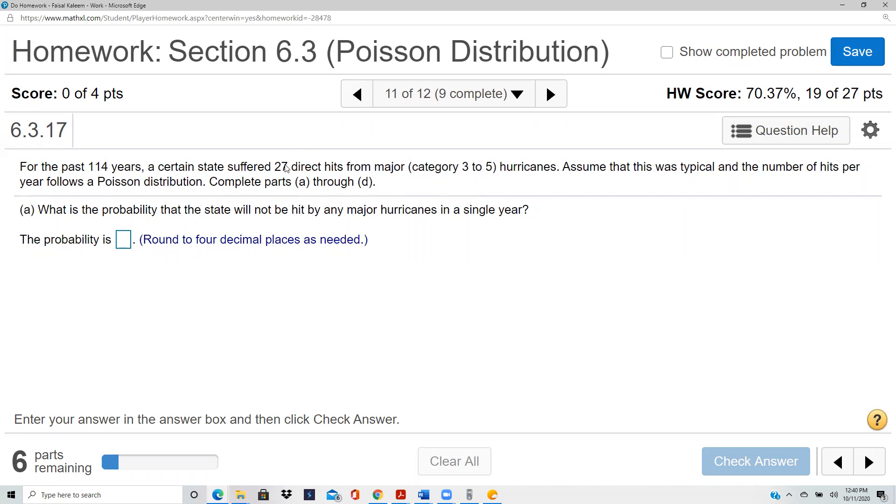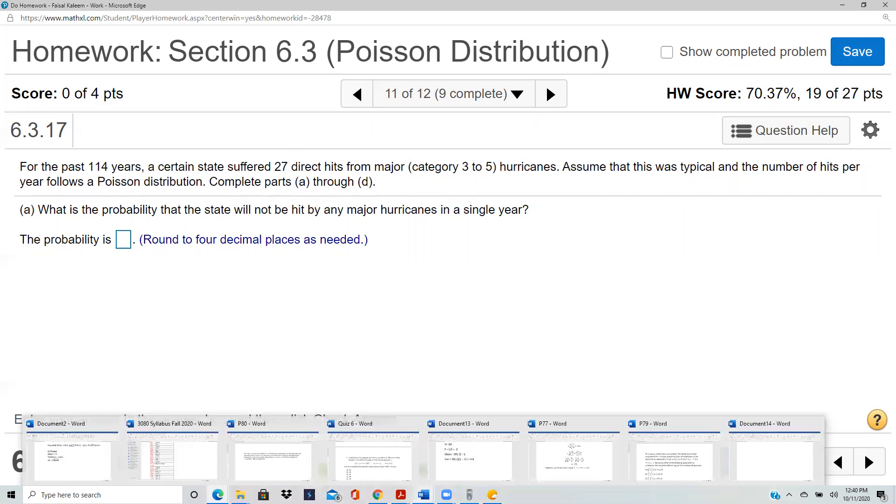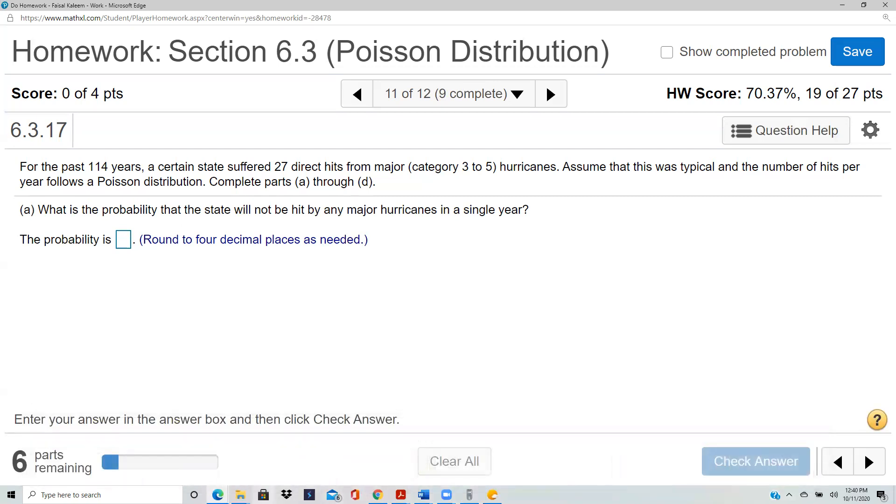So it's 27 hurricanes per 114 years. In one year, it will be 27 divided by 114. So 27 divided by 114 will give you a hurricane average per year. Your mean will be 27 divided by 114. You can do 27 divided by 114 separately, or you can just put that in for the mean.